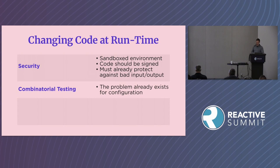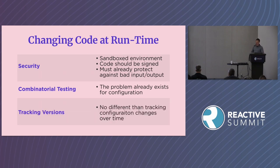People also object to the combinatorial testing this involves — if you can change code at runtime, how can you test all possible combinations? But IoT devices typically have many configuration parameters, and this already creates a combinatorial testing problem. That problem already exists; I don't see it as a new problem. People also mention tracking versions — if a customer calls your support line and you can change code at runtime, how do you know what code they're running? To me, this is no different than tracking which configuration they're running — we already have that problem with configuration parameters.